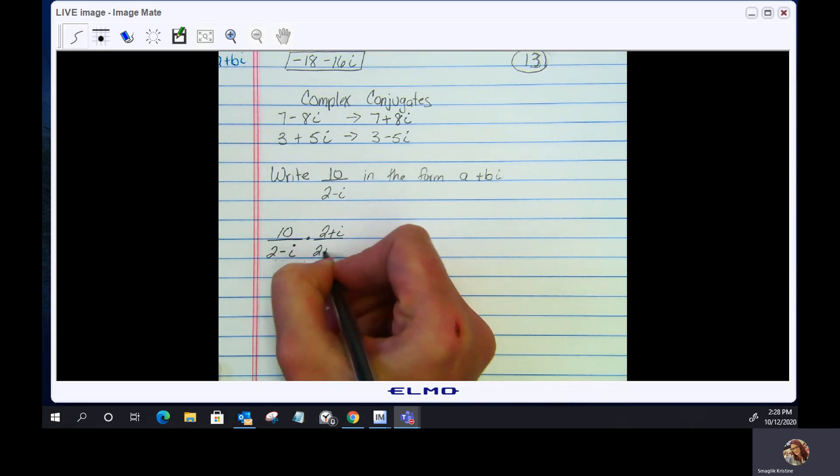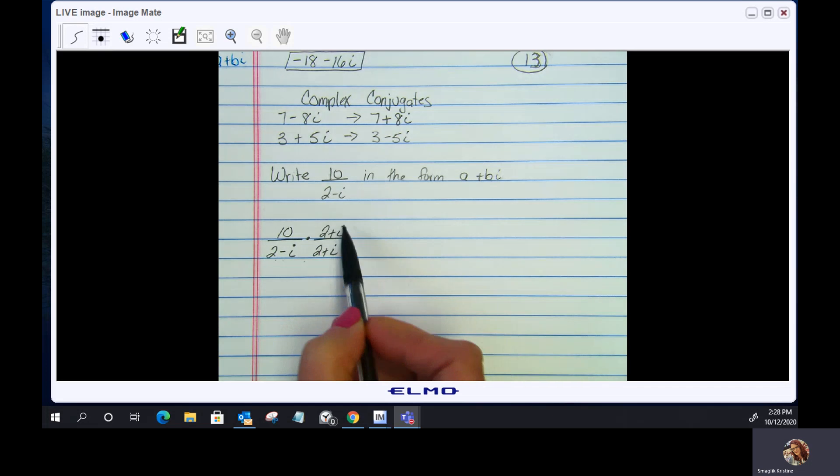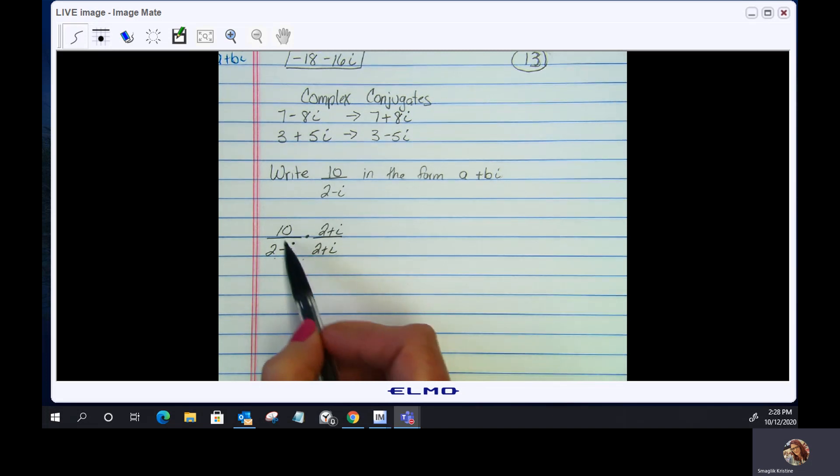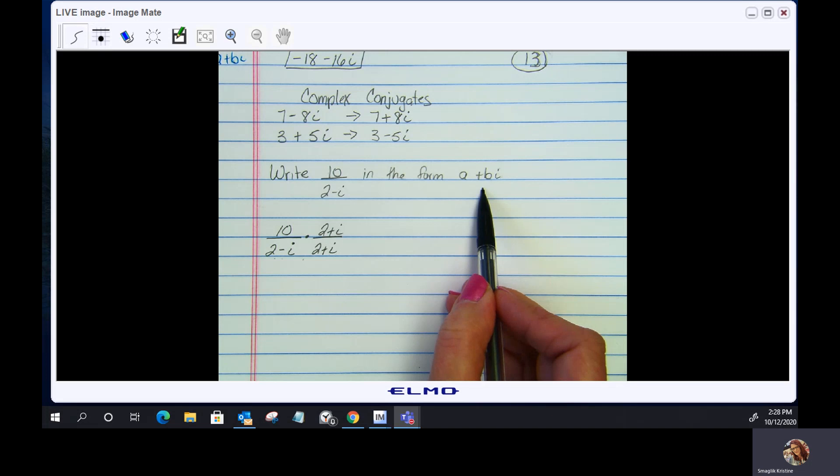Notice this is just a number over itself. If you have a fraction with the same value in the numerator as in the denominator, the value of this fraction is just 1. We're not changing the value of our original. We are just manipulating it into the form a plus bi.